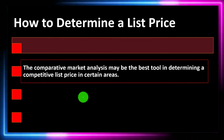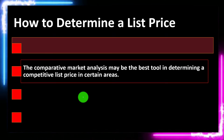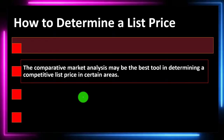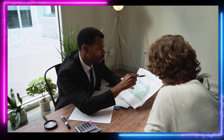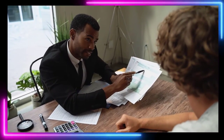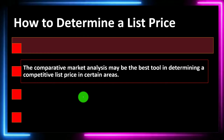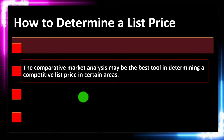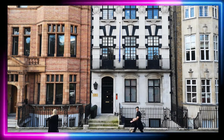How to determine a list price — that's the million-dollar question. The comparative market analysis may be the best tool in determining a competitive list price in certain areas. Most of the time you'll be looking around, doing some kind of appraisal, thinking about what other properties have sold for. There are many tools online to help determine comparable sales, but it's not a perfect science because our property is unique, the time frame is unique, and the current market will have a big impact.